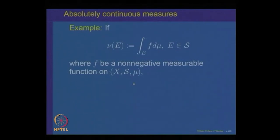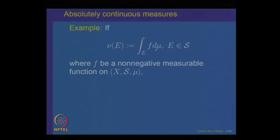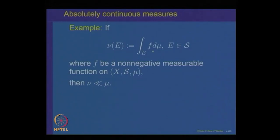We looked at an example of absolutely continuous measures. Let us take a function f which is non-negative measurable on a measure space (X, S, mu) and let us integrate this function over a set E in the sigma algebra. This integral defines nu of E, and we had shown when we defined the integral for non-negative functions that nu of E is a measure. It has the special property that if mu of E is equal to 0, then nu of E is also equal to 0. So this measure nu, defined via the integral of a non-negative function f over a set E, is absolutely continuous with respect to mu.